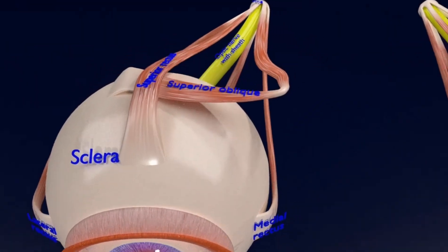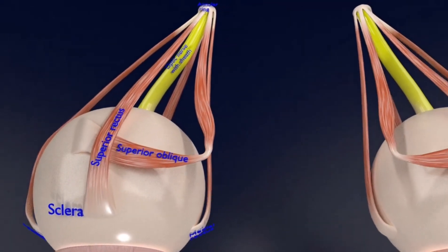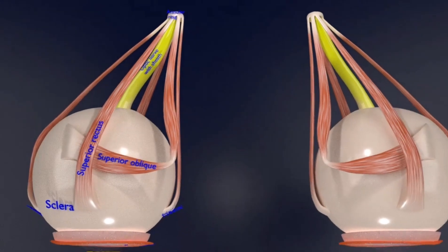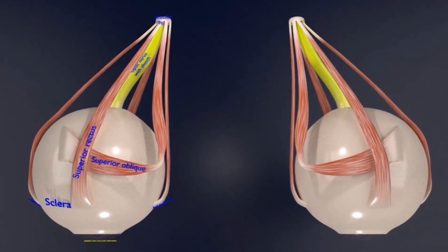Here, you can see the extraocular muscles inserted into the sclera, that is, the superior rectus and superior oblique.